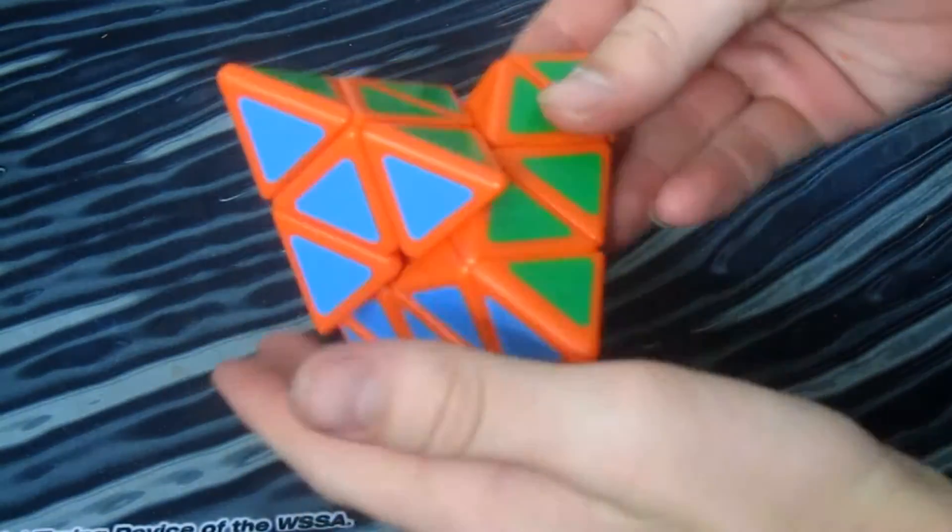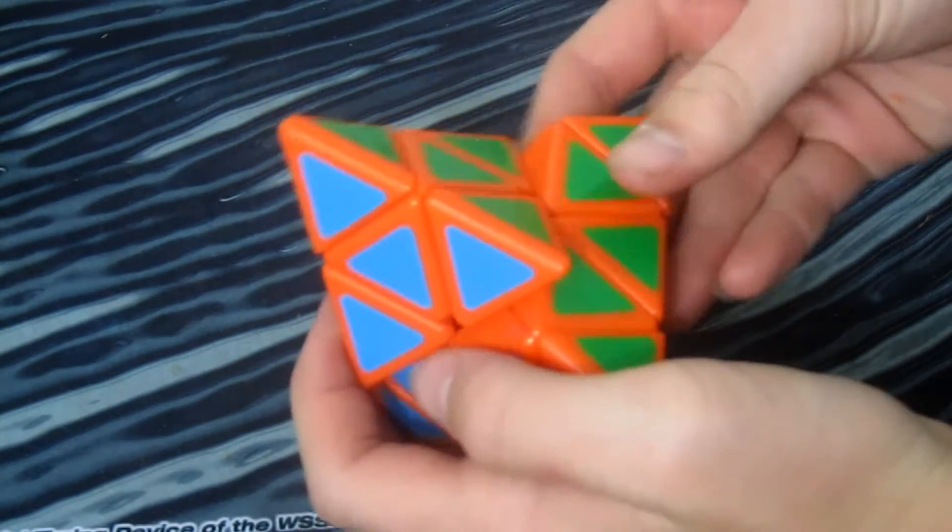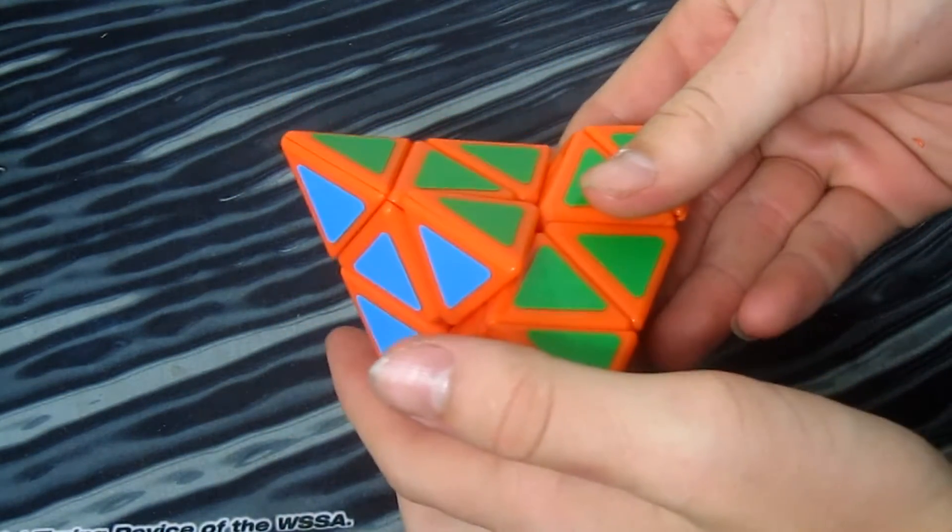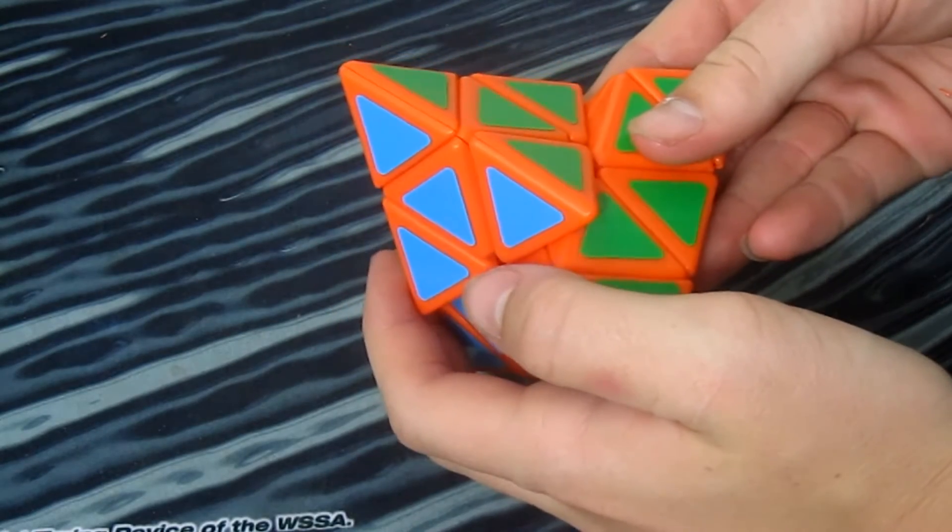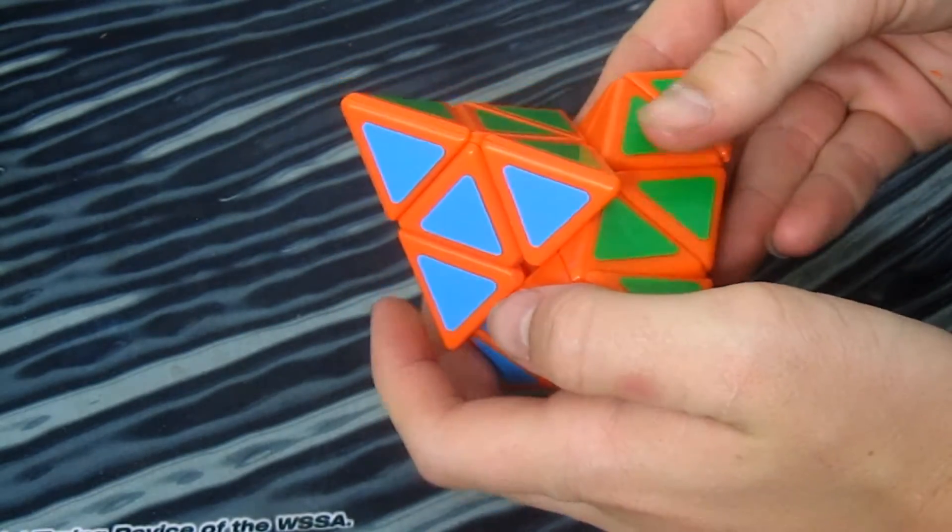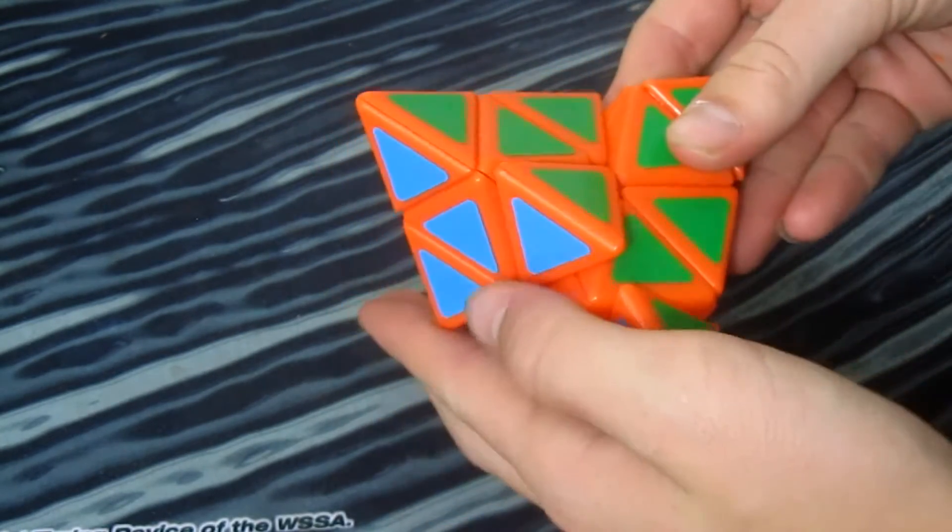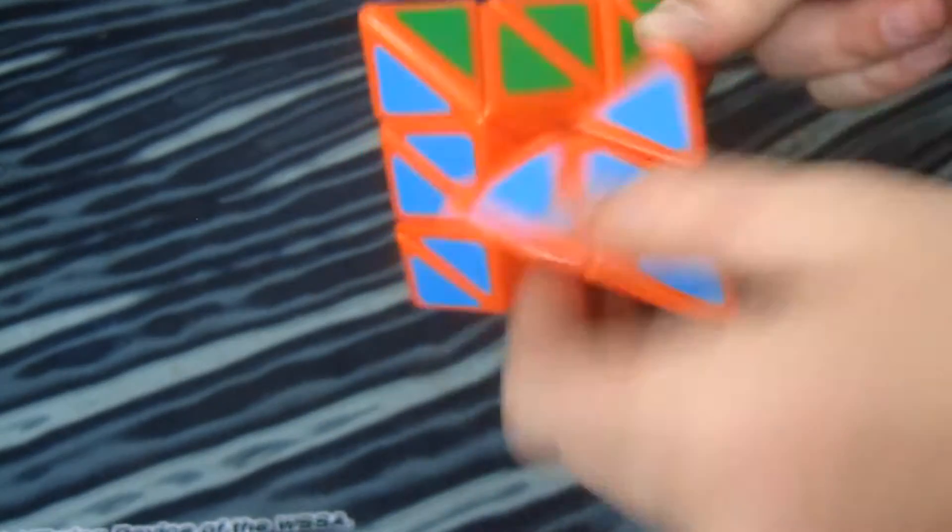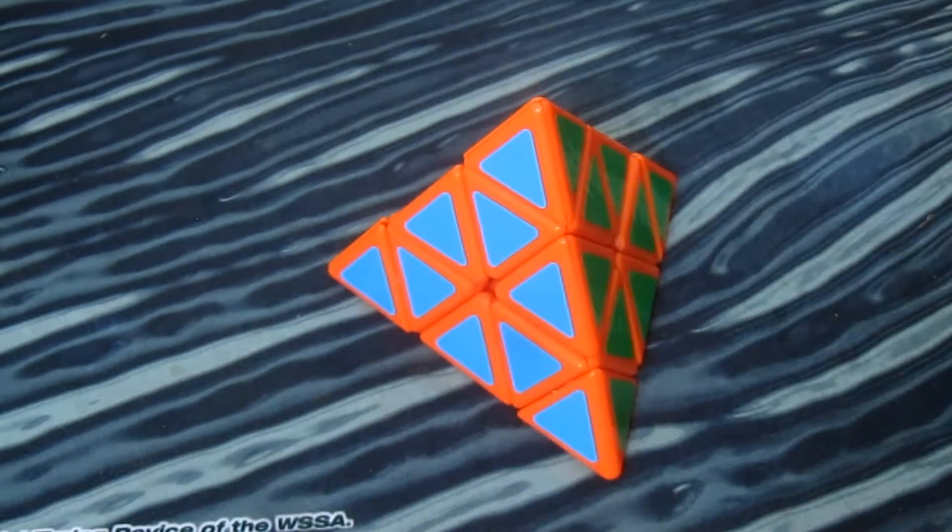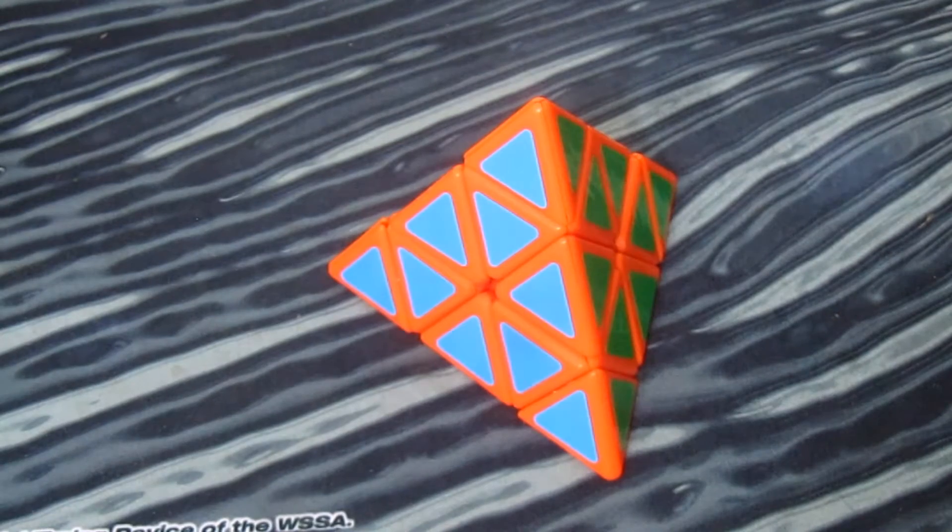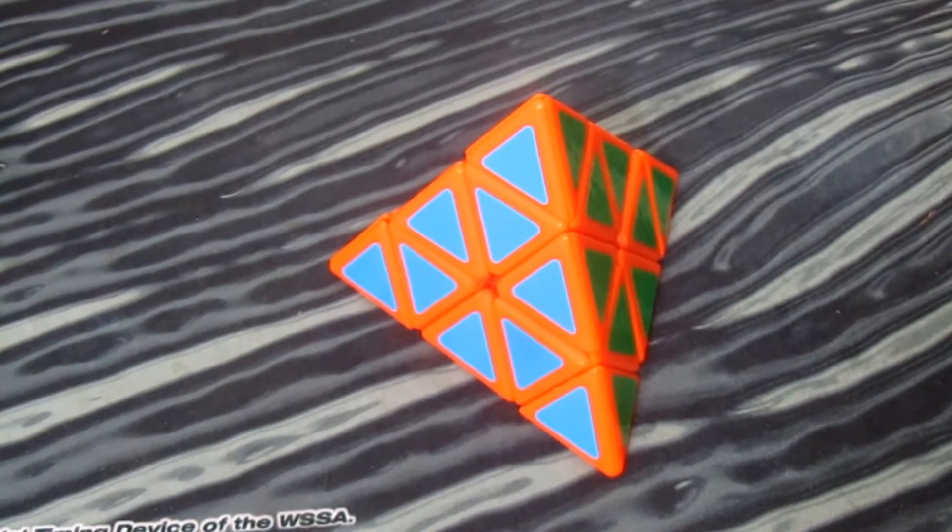As for corner cutting, it's actually not very good with this Pyraminx, which is one of the only downsides. It can only cut about half a cubie, maybe even three-fourths on some occasions. But again, it is extremely controllable, which decreases lockups.